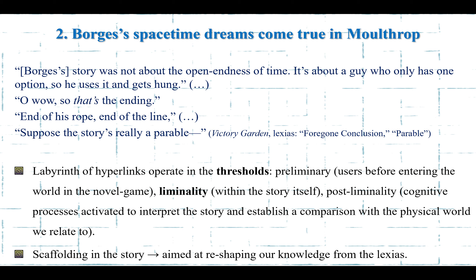As for the space-time in Moulthrop, we could say that the idea of space-time that Borges envisioned has come to a materialized self. And I quote from Victory Garden: 'Borges' story was not about the open-endedness of time. It's about a guy who only has one option. So he uses it and gets hung. That's the ending. End of his rope. End of the line. Suppose the story is really a parable.' This belongs to the lexias 'Foregone Conclusion' and 'Parable.'